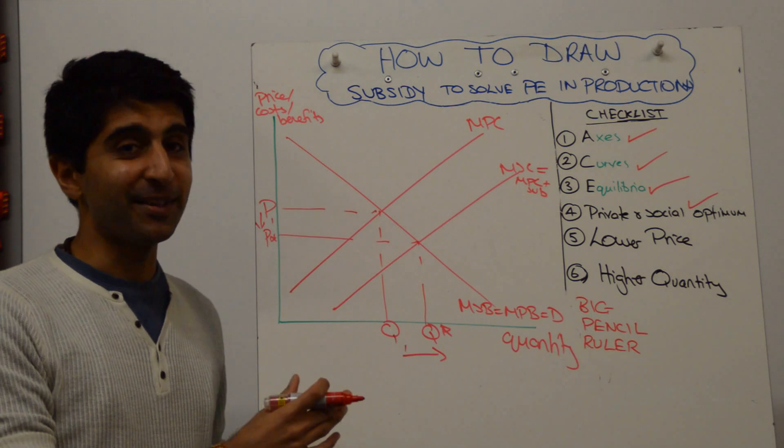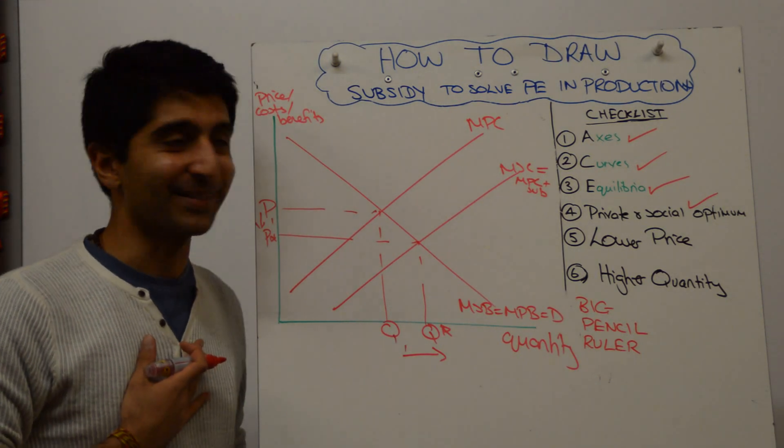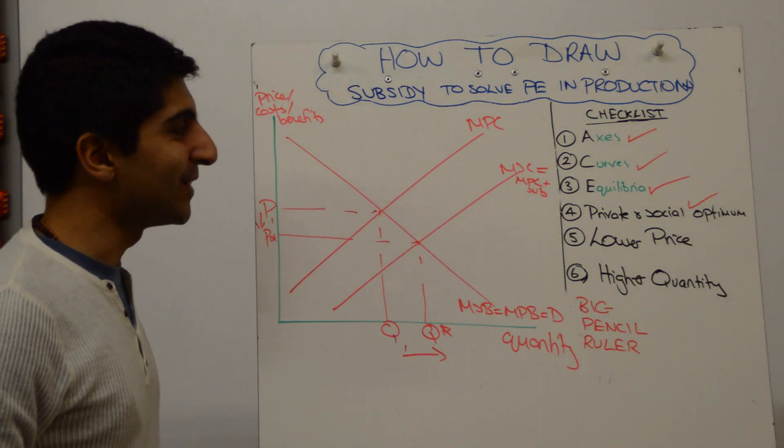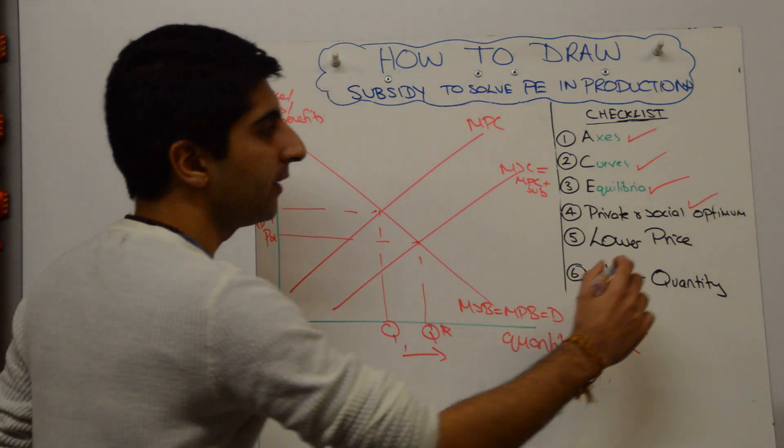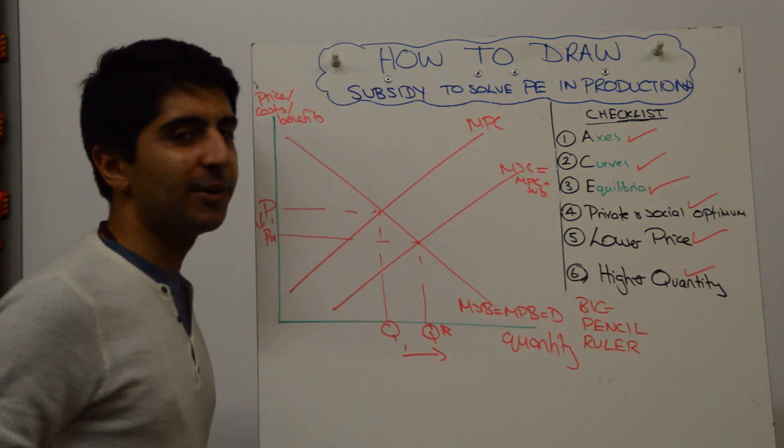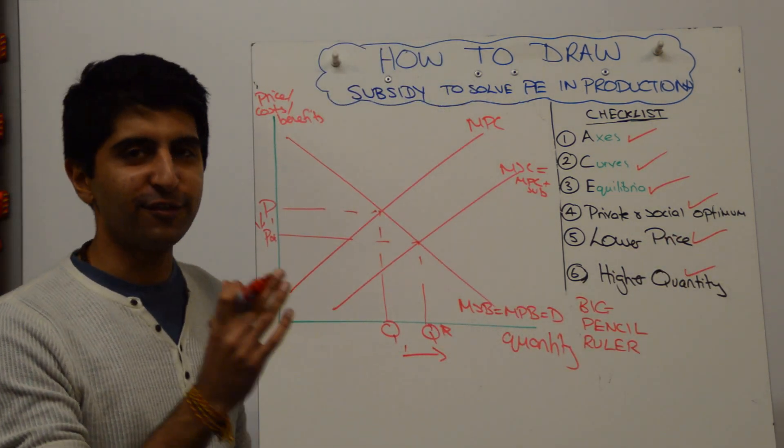The real test is, did I miss that on purpose or did I actually forget to do it myself, right? I think, leave that one for you to decide. But look, a lower price and a higher quantity has now been shown, okay? So the arrow is fundamental there.